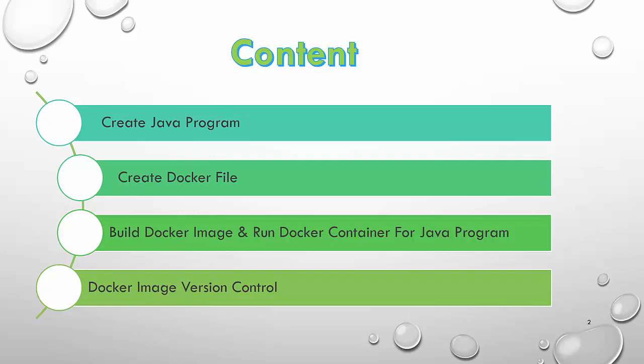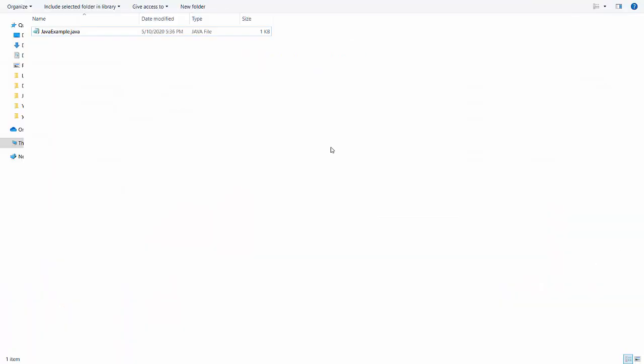In this video, we will discuss creating a Dockerfile for a Java program, we will build an image and create a Docker container. At the end, I will show you how to maintain a Docker image version. The pre-requisite for this video is you should have a basic understanding of what Docker is and how it works. I recommend you watch my previous video if not yet watched — the link is provided in the description. So let's quickly start.